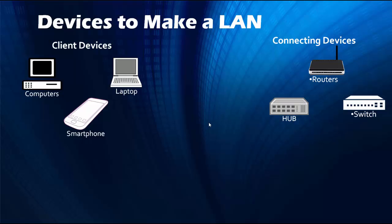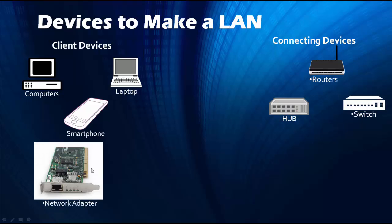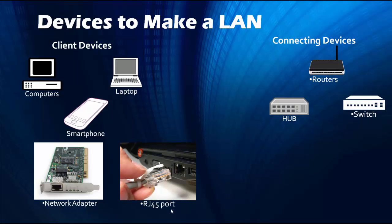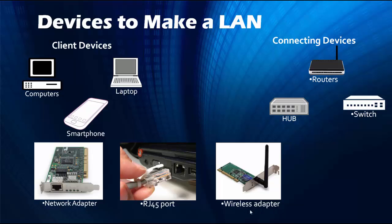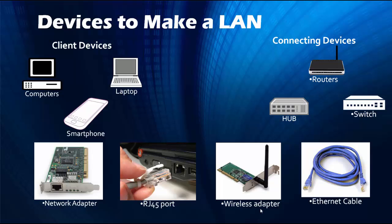We have discussed central connecting devices already in our previous video. These client machines or host machines are generally connected to central connecting devices, which perform in different ways. Now we come to network adapters, also known as network interface cards, that allow the computers to connect to a network. All client devices should have a network interface card. Wired adapter features are called RJ45 port and wireless adapter features are called wireless access point, or WAP.